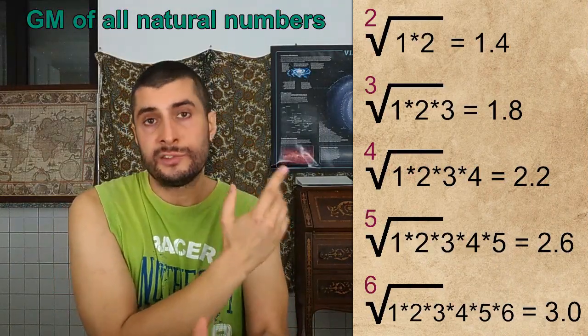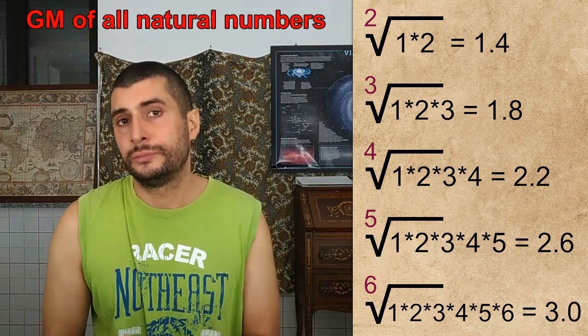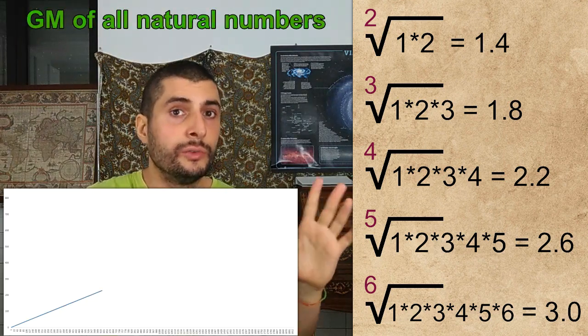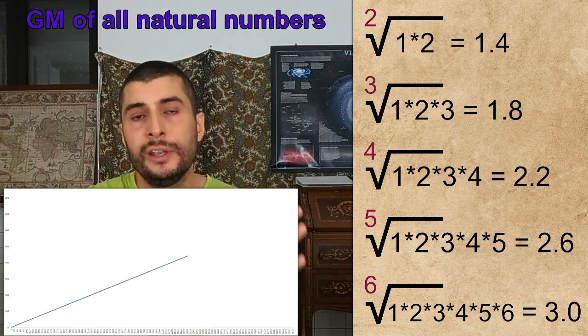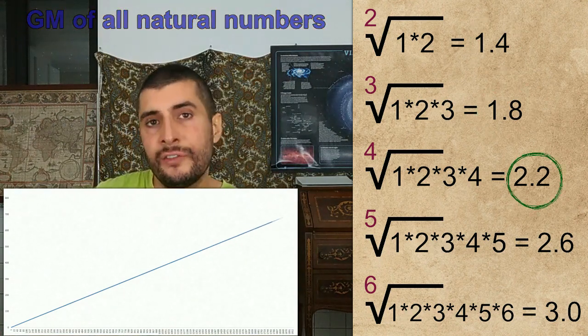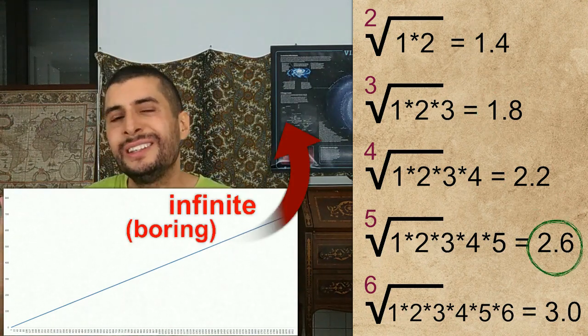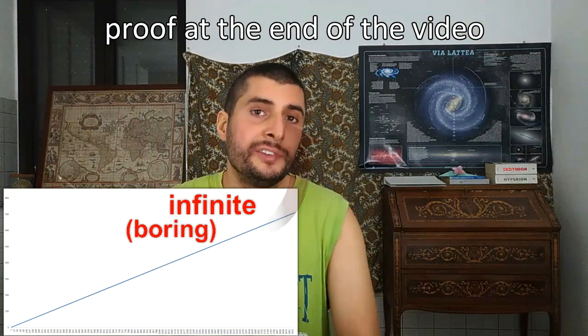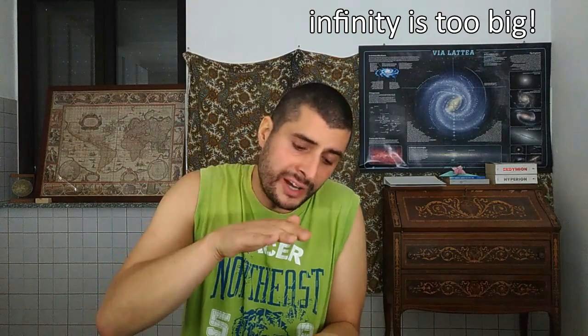Boring. Let's try with the geometric mean then. The square root of 1 times 2 is 1.4. The cube root of 1 times 2 times 3 is 1.8. Even with the geometric mean, the average keeps increasing indefinitely — the answer is infinite again. What we need is a way to compress, to squeeze these averages, to make them finite.